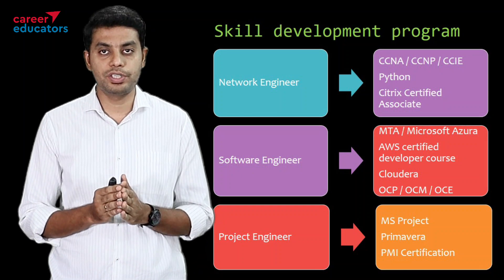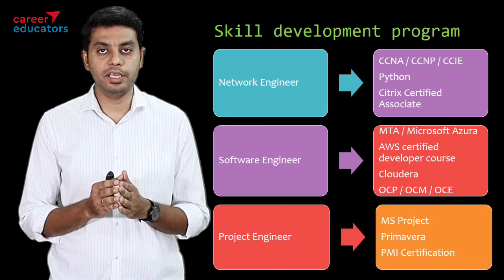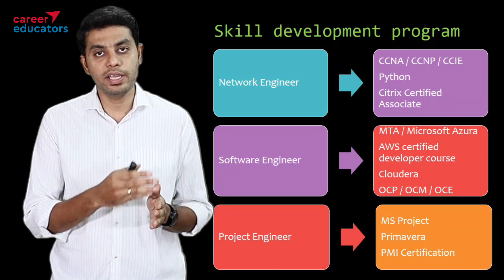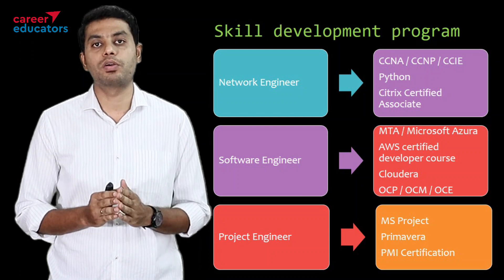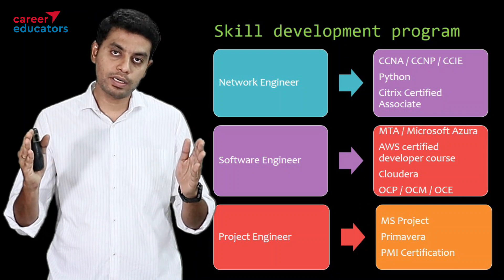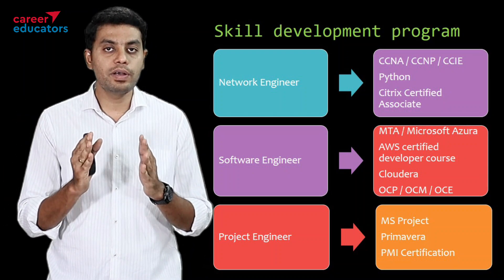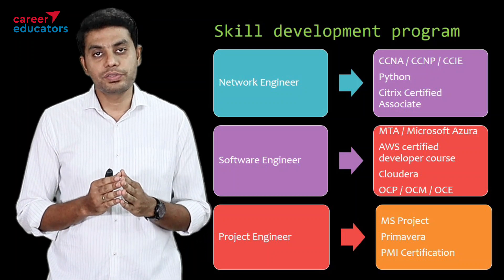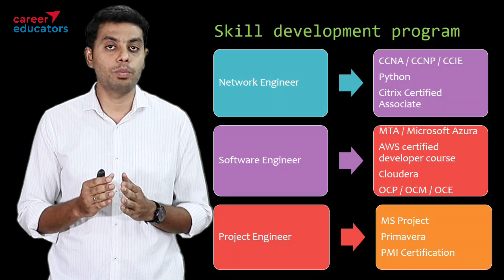Suppose if you are planning to become a software engineer, you have to do any one of the certification programs. During your 4 years of engineering, you have to learn the basics of coding. Apart from that, you have to get certified. If you are aiming at the project management level, you have to learn project management software like MS Office or Primavera.